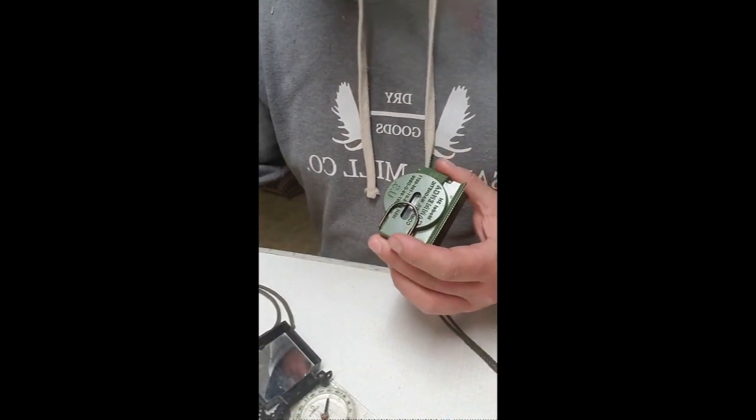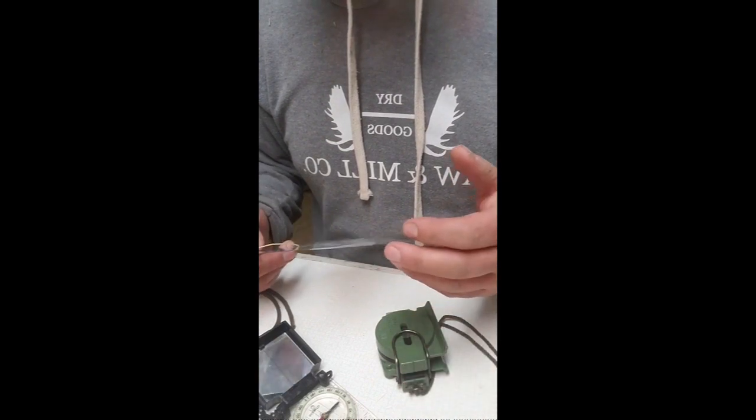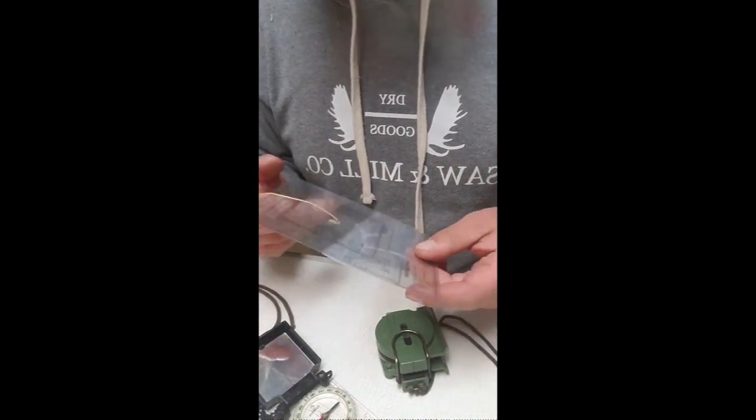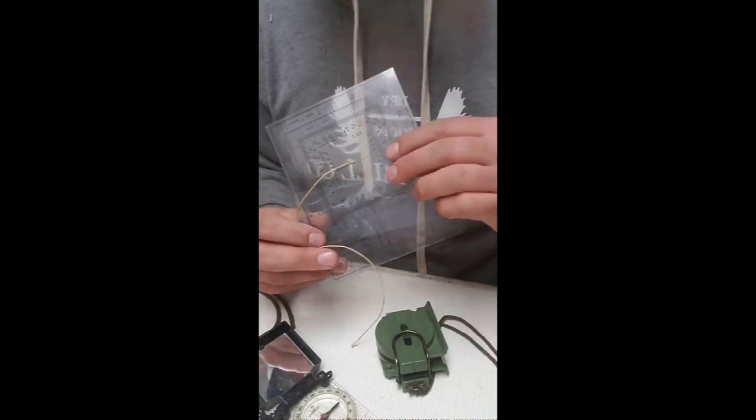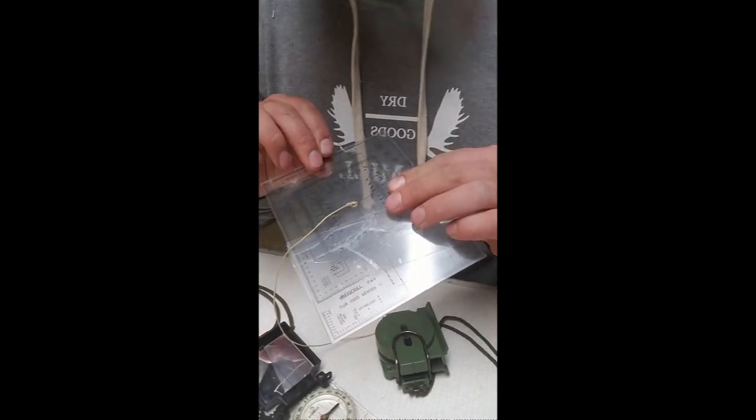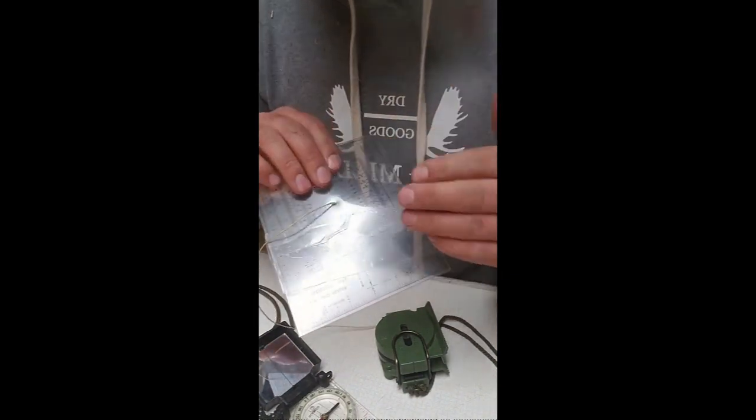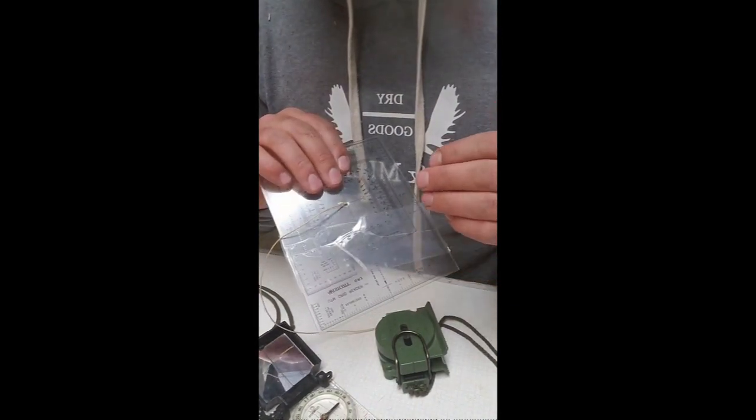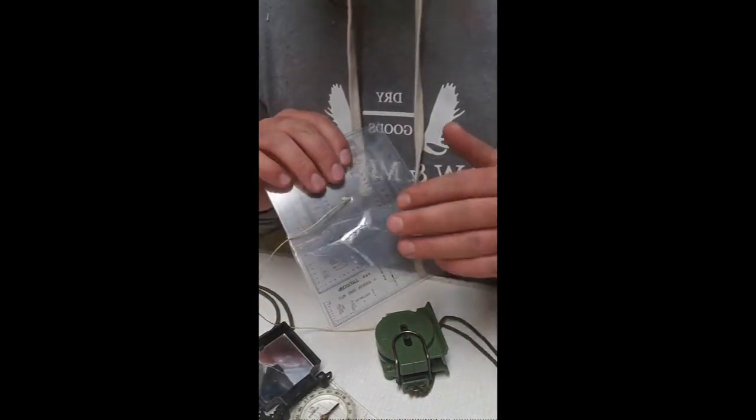If you're using this style of compass and you're going to do some map work out of the field, you really do need to have a separate protractor. This is a UTM grid overlay that can use this to plot GPS, UTM coordinates, and such.